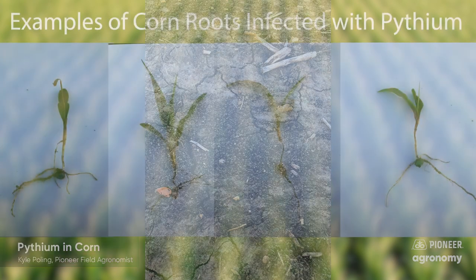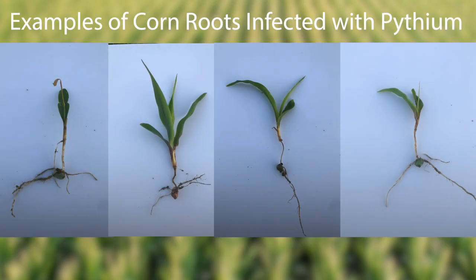Seedling diseases infect roots causing them to become brown in color, forming necrotic areas, or resulting in total collapse of the root itself. Plants that are missing the radicle or seminal roots, or have very few fine root hairs, can cause seedling growth to be very sluggish.